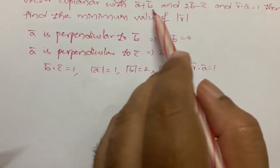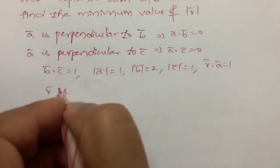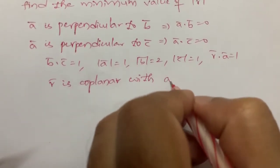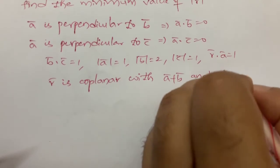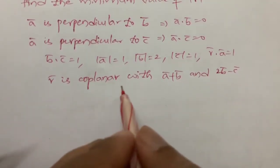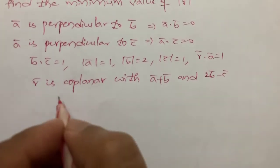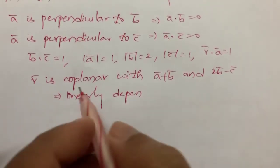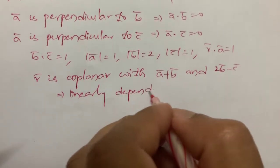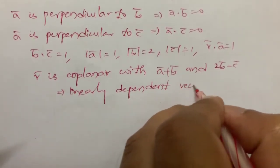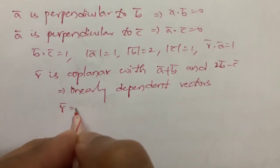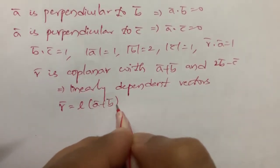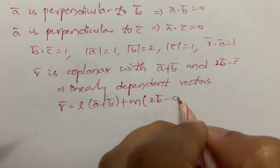So r bar is coplanar with a bar plus b bar and 2b bar minus c bar. Since they are coplanar, this means they are linearly dependent vectors. So r bar, a bar plus b bar, and 2b bar minus c bar are linearly dependent vectors — one vector can be expressed as the sum of the other two. So r bar is equal to some l times (a bar plus b bar) plus m times (2b bar minus c bar).